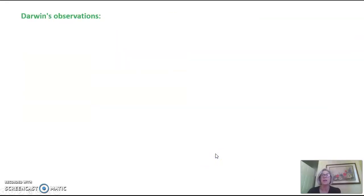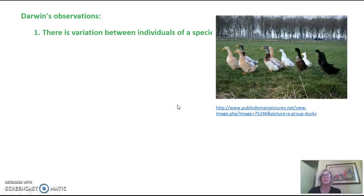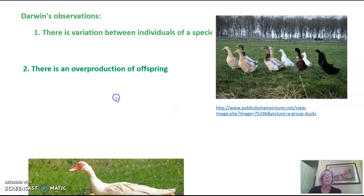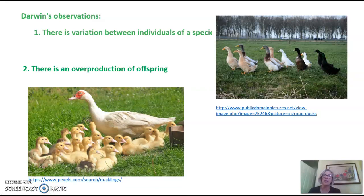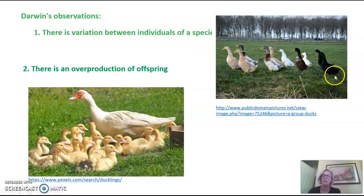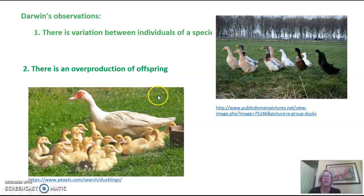While Darwin was on the Galapagos Islands, he made two observations. First, there is variation between individuals of a species. If you look at this population of ducks, you can see variation in their feather color — it varies from very dark, to lighter and multicolored, to finally pure white feathers. Second, there is overproduction of offspring. You can see this mother duck is completely overwhelmed by the overproduction of offspring.